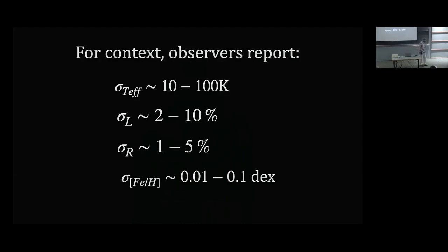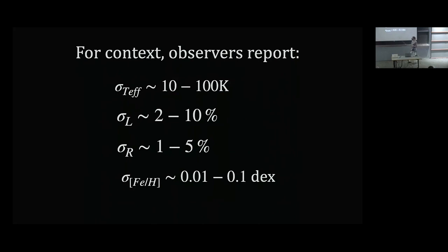It's important to couch this discussion in the context of observations, because our models are only as good as the observations we use to test them. Looking at the literature today, people are reporting precisions — not necessarily accuracies — of 10 to 100 Kelvin for effective temperature, a few percent in radius and luminosity, and 0.01 to 0.1 dex in surface iron abundance. Anyone who has worked significantly on 1D models will be uncomfortable by those numbers, because you know that if you change anything in your model, it moves by that much.